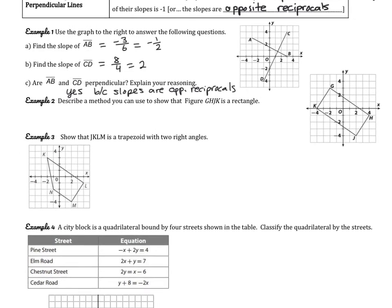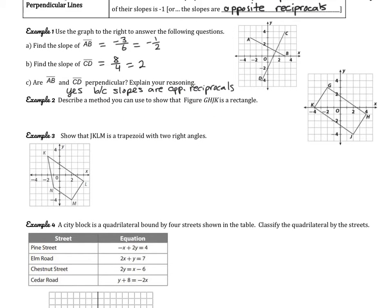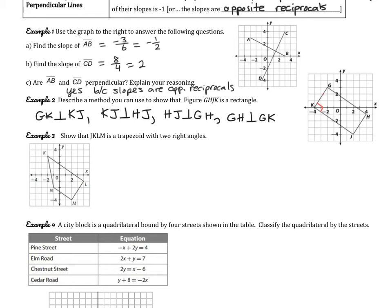Let's move on to example 2. We're asked to describe a method to show that figure GHJK is a rectangle. One way is by proving all four angles are right angles: showing GK is perpendicular to KJ, KJ is perpendicular to HJ, HJ is perpendicular to GH, and GH is perpendicular to GK. That would show we have four right angles, which is the definition of a rectangle.